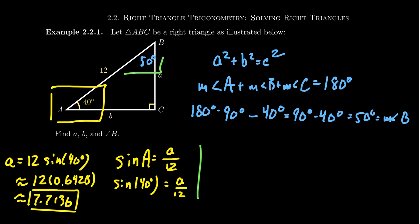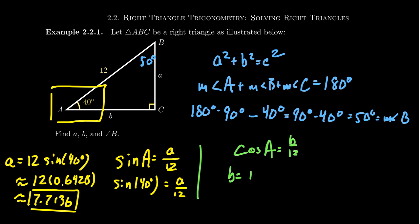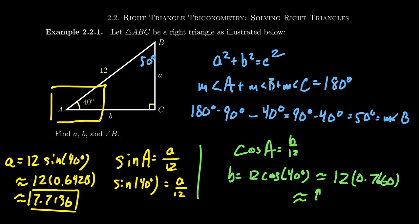That's why I avoided using angle B in my calculations. Side b is the adjacent side with respect to angle A, and 12 is still the hypotenuse, so the cosine relationship applies. Cosine of A = b/12, which means b = 12 × cos(40°). That's the exact answer.